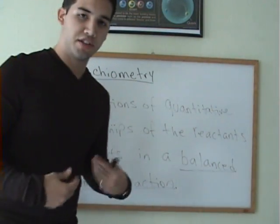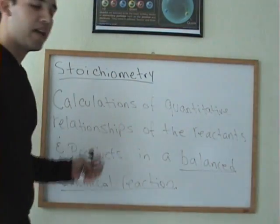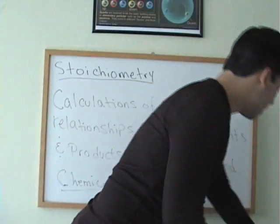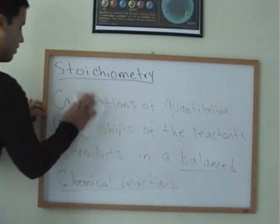Well, stoichiometry deals with calculations of quantitative relationships of the reactants and products in a balanced chemical reaction. Notice key word, balanced chemical reaction. If your chemical reaction is not balanced, you will not be able to solve a stoichiometric problem. So, make sure that everything is balanced.